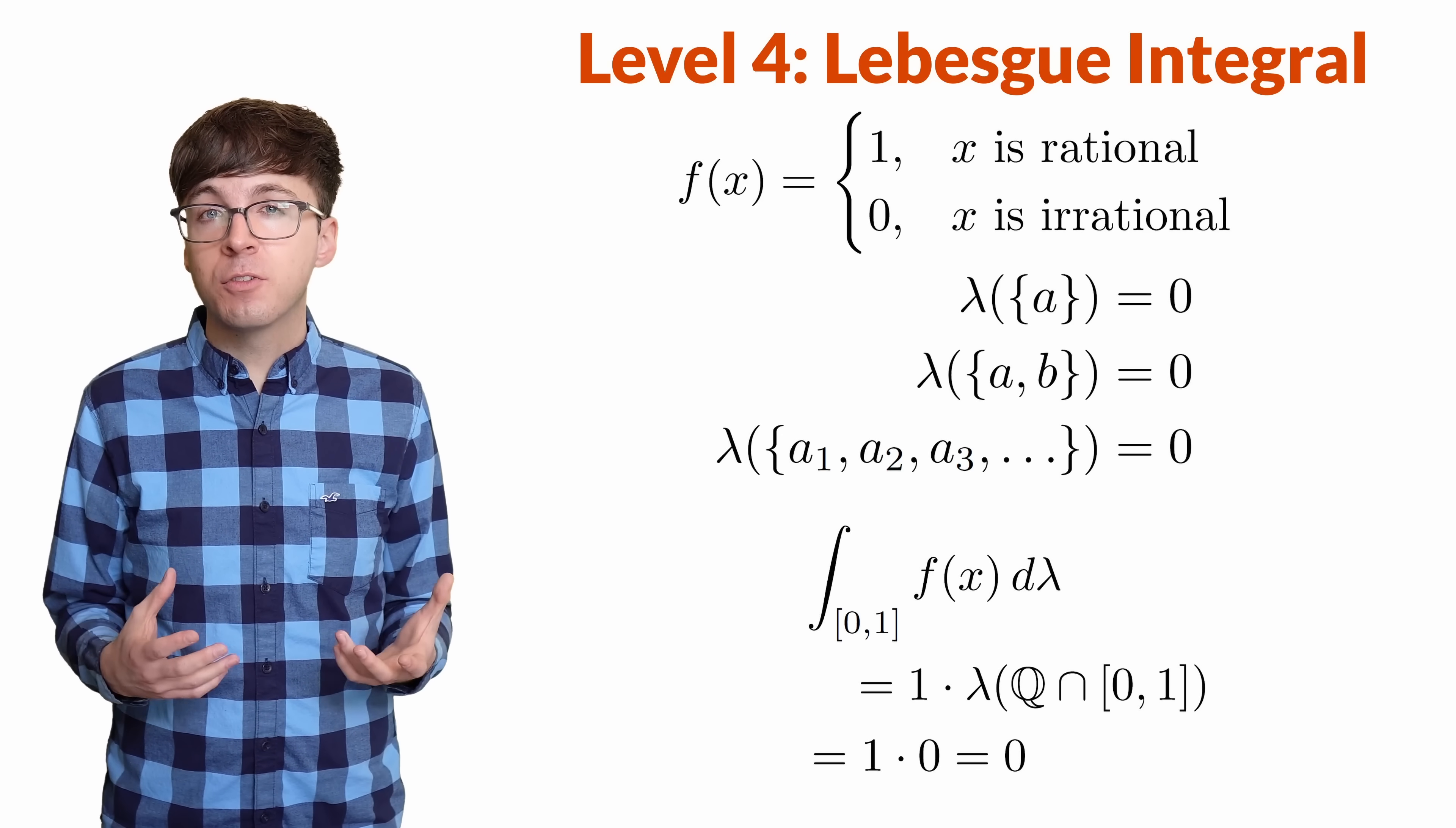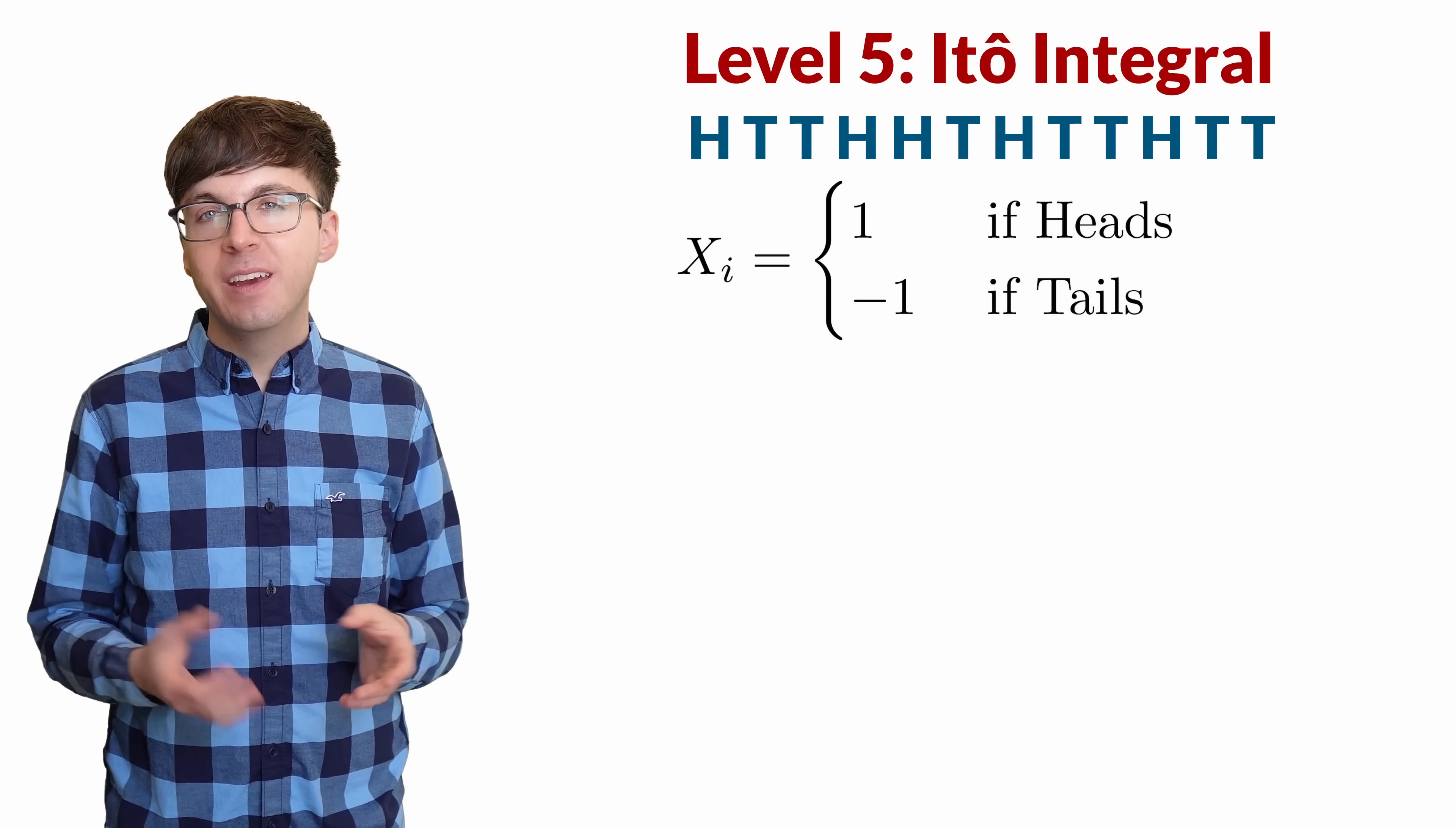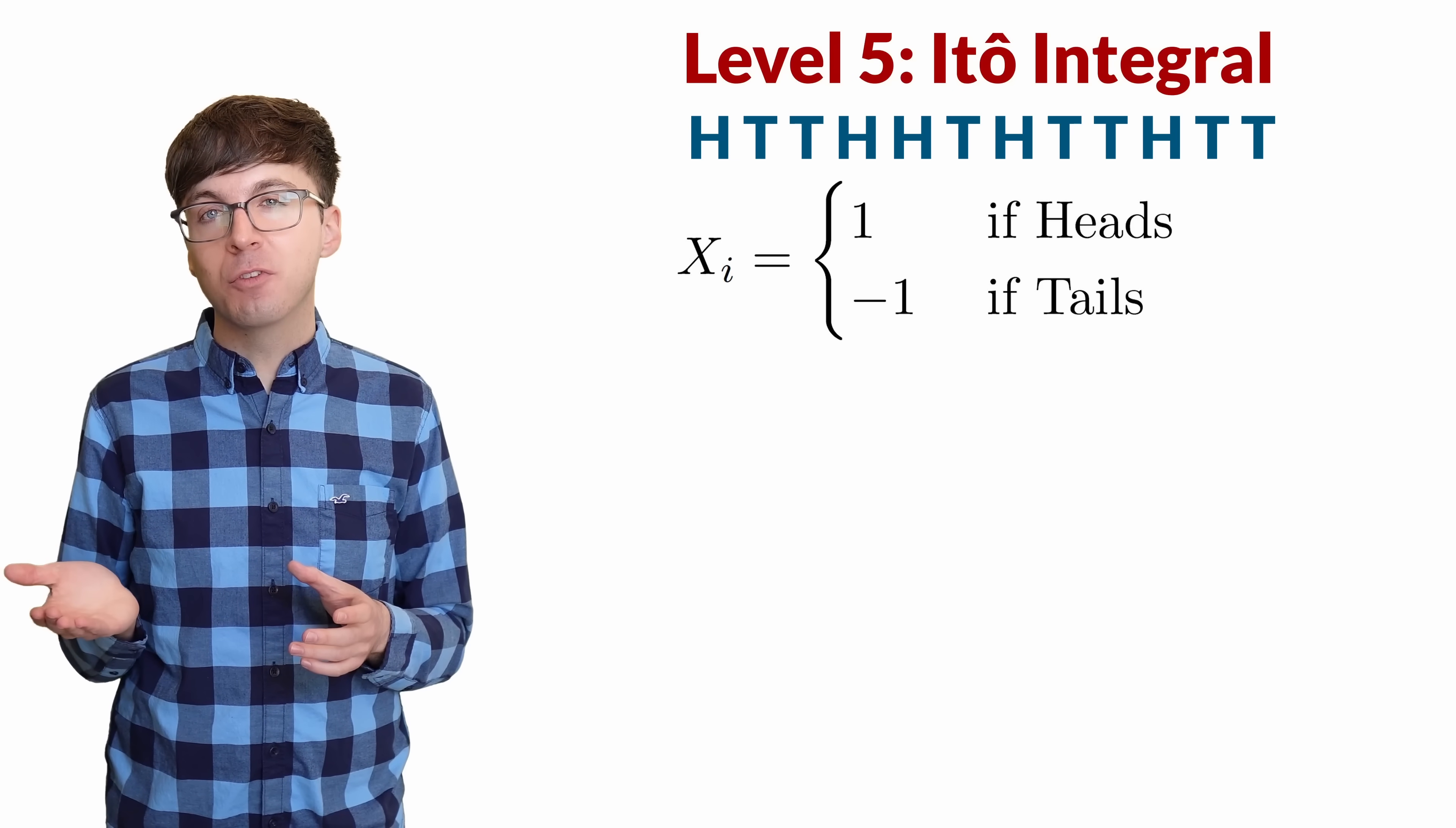For level 5, let's see how we can integrate with respect to a random process. Imagine someone's flipping fair coins. Heads is plus 1 and tails is minus 1. You develop a betting strategy. You bet H_i dollars on the i-th flip. Your bet can depend on the results of the previous flips if you want, but you're not allowed to peek into the future.